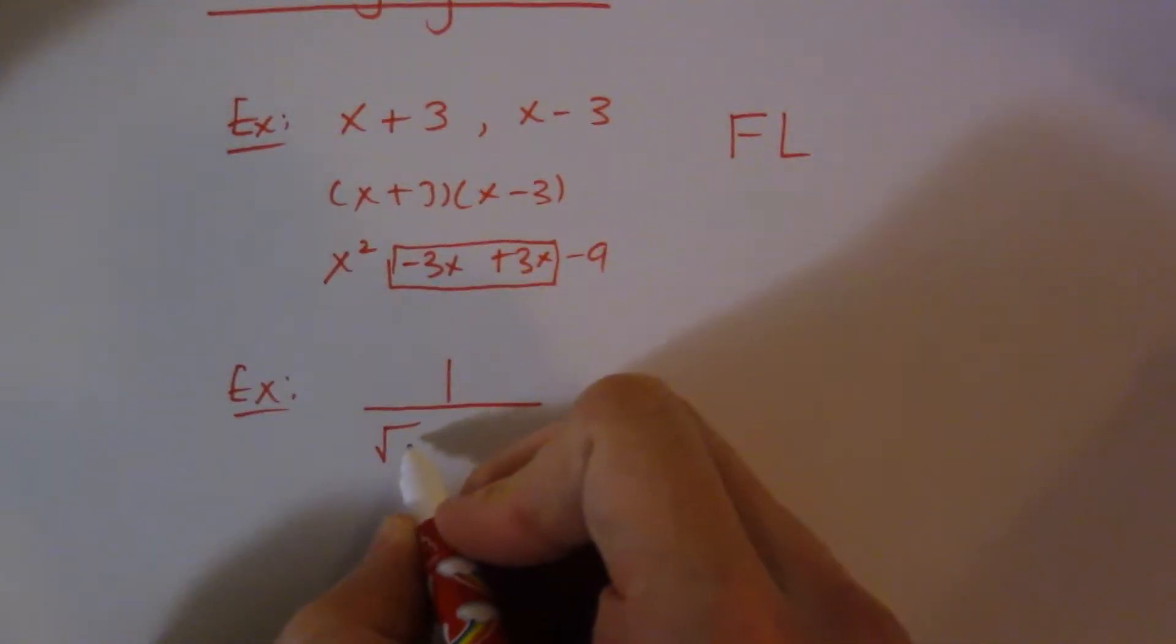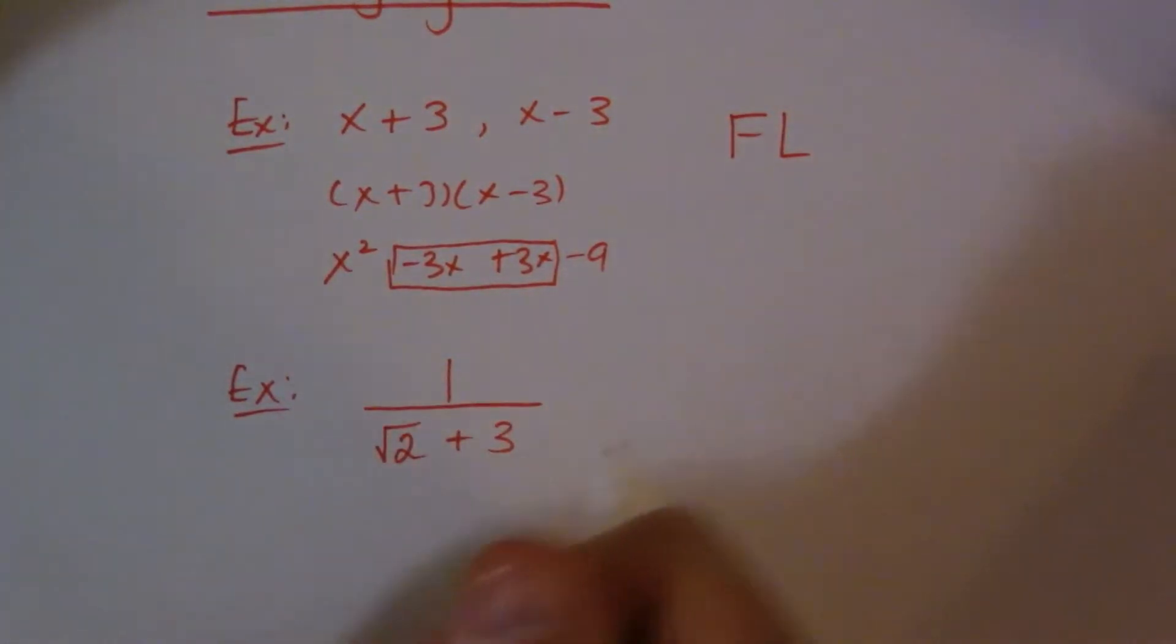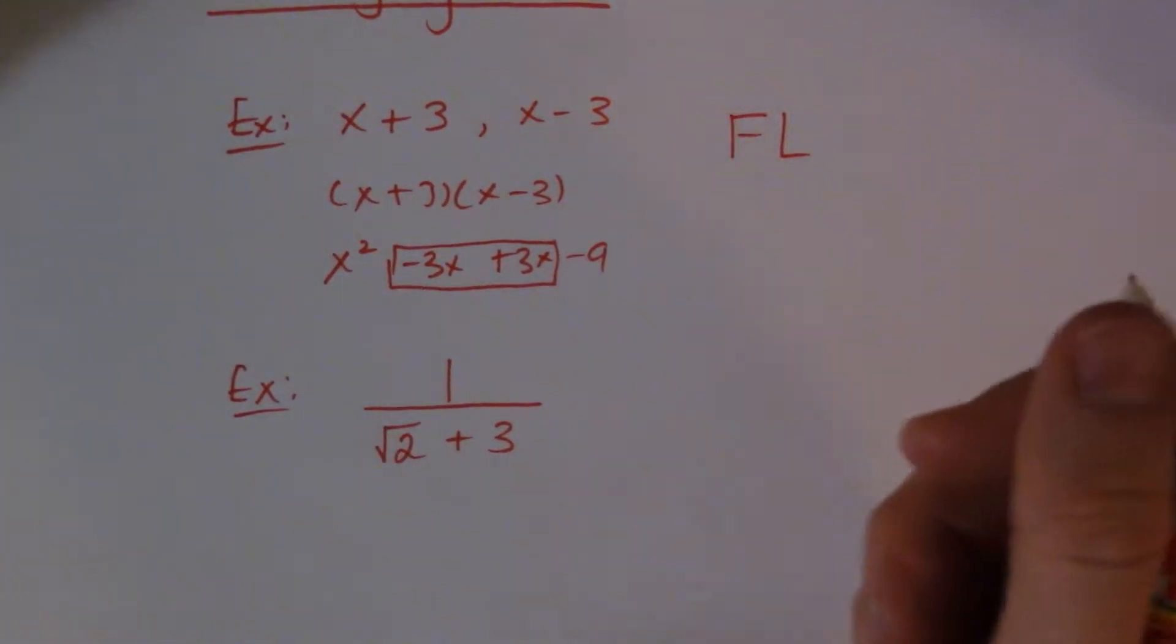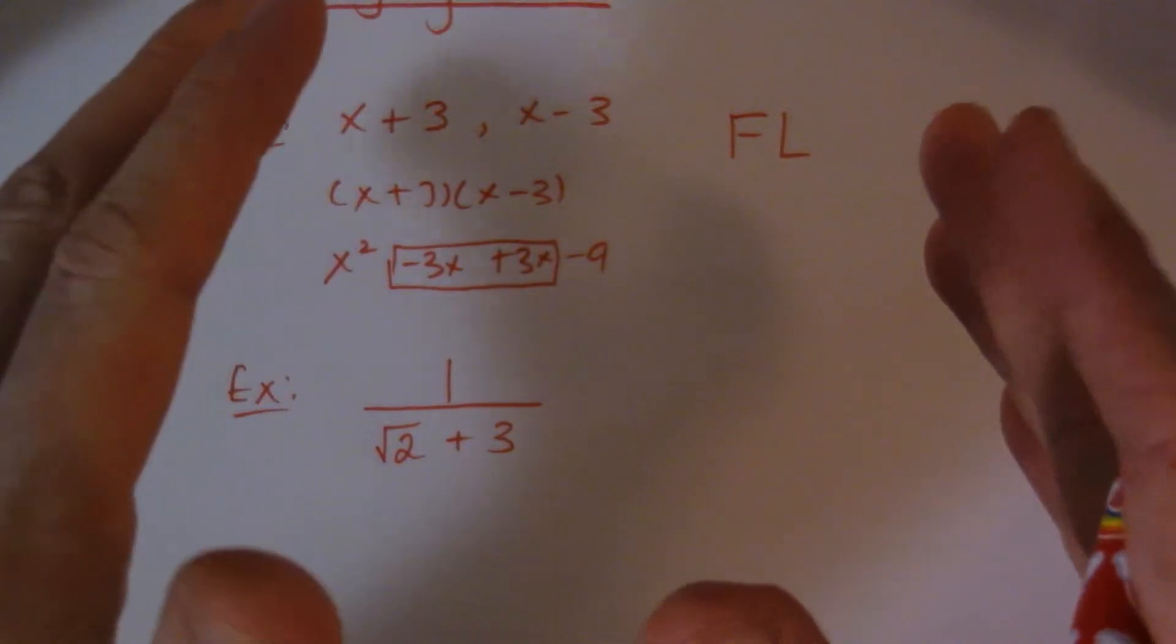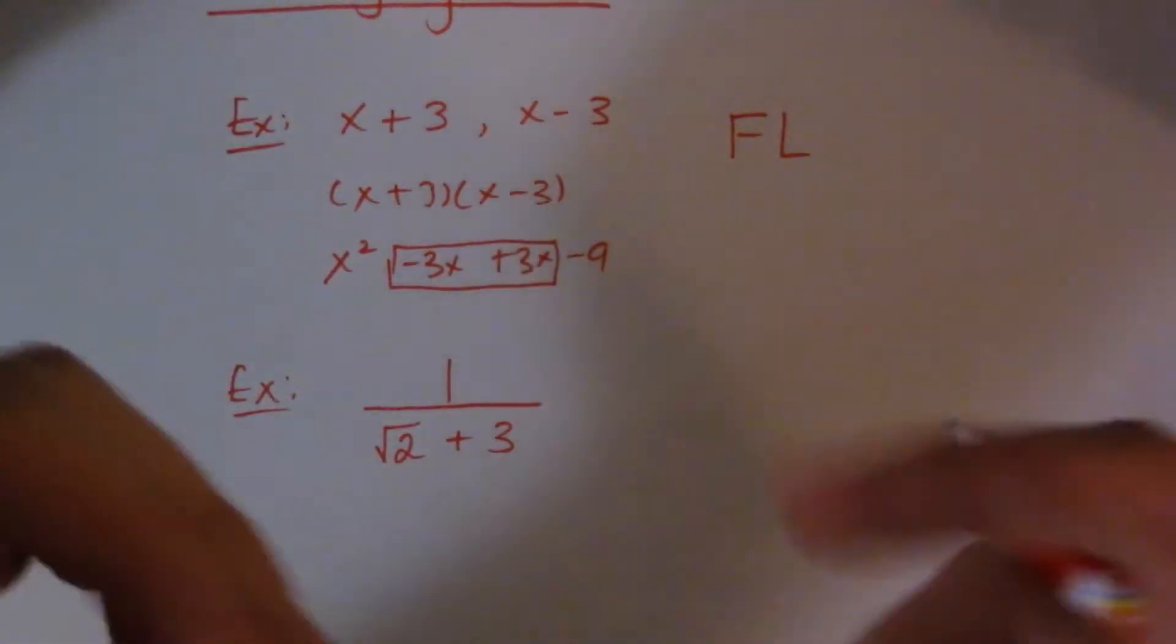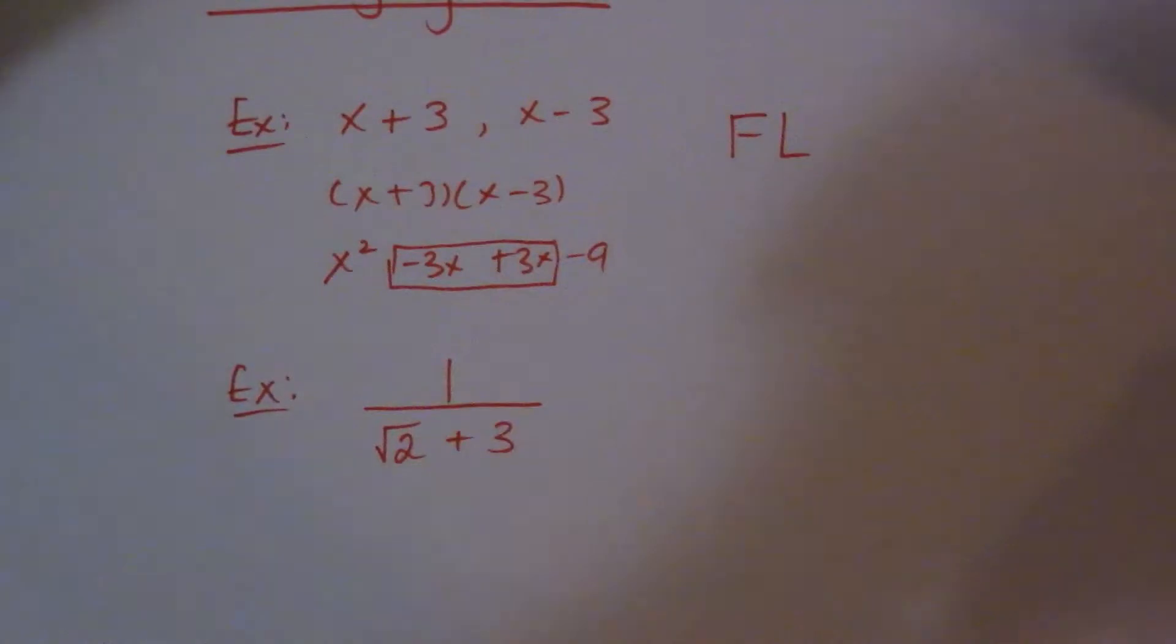So if I have something like root 2 plus root 3. The rule is about roots, and you've probably done this in your classes, we cannot leave a root in the bottom of a denominator, or on the bottom of a fraction. We have to get it up to the top. So the way we do that is the conjugate.